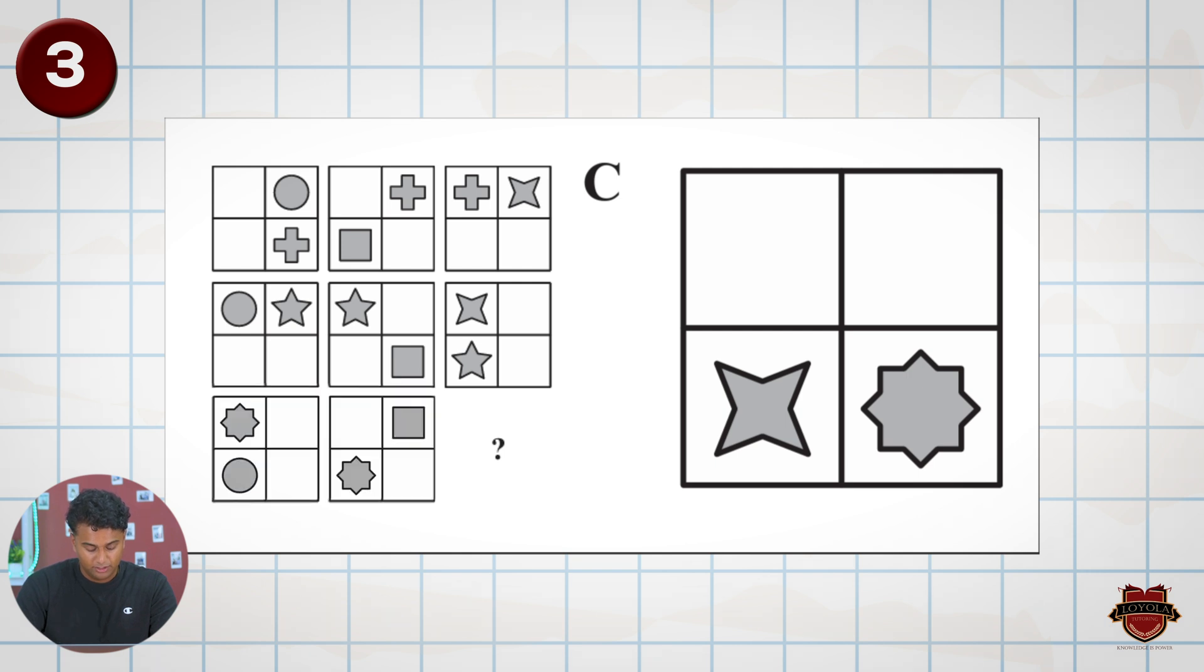And looking across, the octagon is going plus one, plus one, and it's also at the bottom right position. So C in both ways of figuring it out is the correct answer.